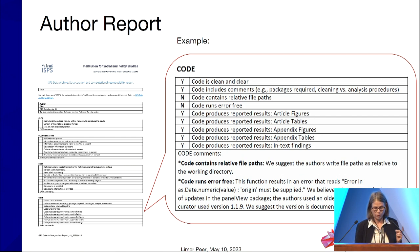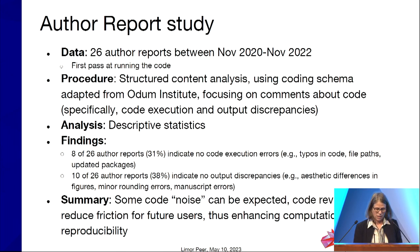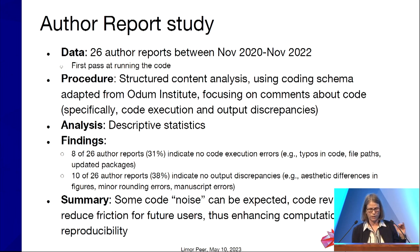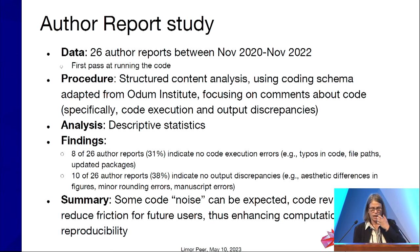The ISPS team intercepts these materials at various points in the research life cycle. Ideally, we want to see them as soon as possible, even before submission to a journal. Another great time is during revise and resubmit. But in many cases recently, these materials have already been deposited or published with journal repositories, and we just work on the copy. For our study, we took 26 author reports published over a period of two years. We conducted a structured content analysis using a coding schema developed by the Odom Institute, and we found that about 31% of these author reports include comments about code execution errors.